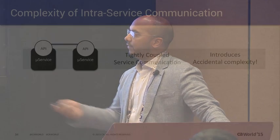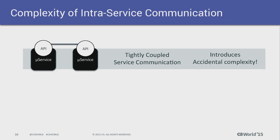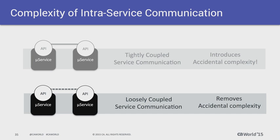In terms of complexity worth noting when it comes to microservices: there's often a lot of inter-service communication happening. A lot of that communication is starting to look tightly coupled — there might be a lot of data typing, or APIs that are difficult to change. That can actually introduce accidental complexity to the system. If we could come up with better solutions — ways of loosely coupling these services — we can do what Brooks described and chip away at some of that accidental complexity.